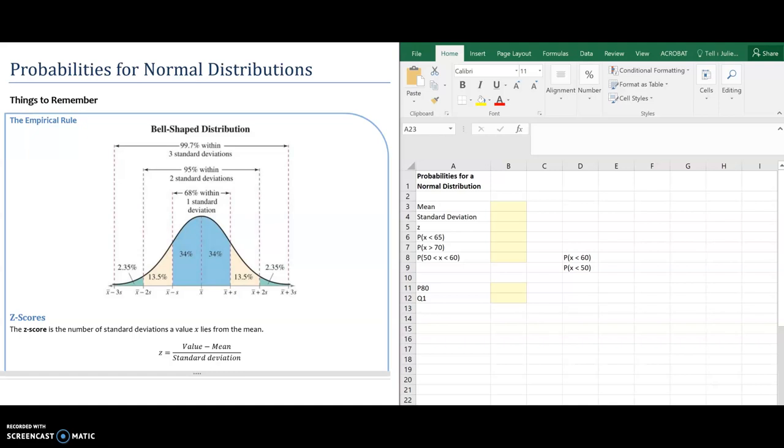Hey everybody. Today we are going to learn how to calculate probabilities using a normal distribution. Some things to remember as we get started is the empirical rule and how to calculate z-scores.